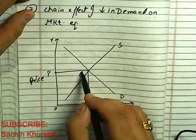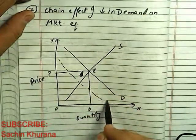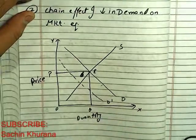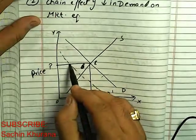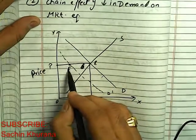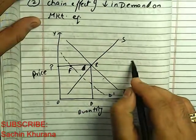Now, a decrease in demand. We have a new demand curve, that is D dash. This is decrease in demand. At the same price, we have a new intersection point F. Now this is a case of